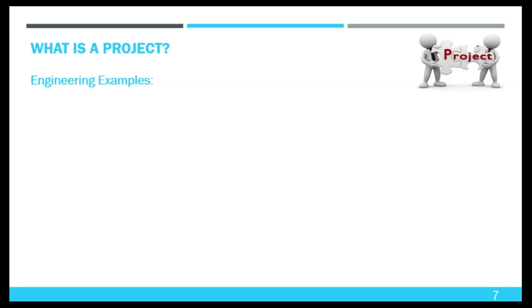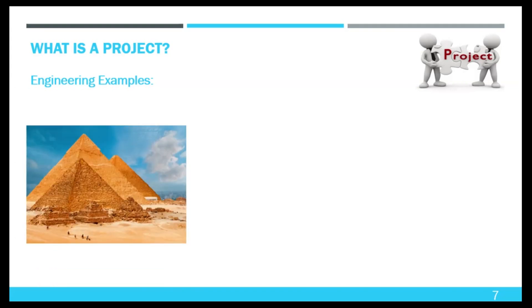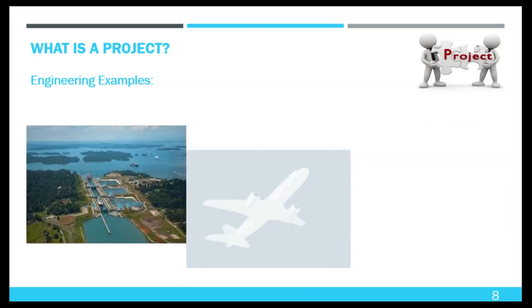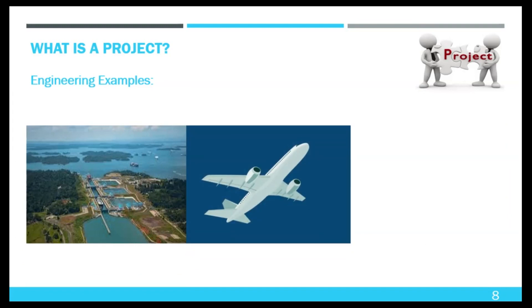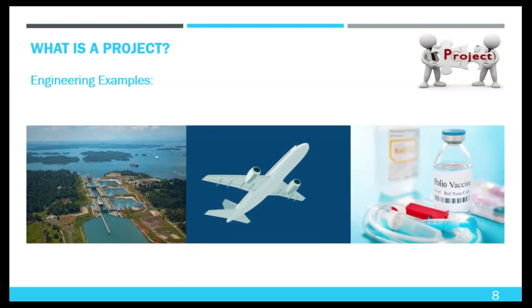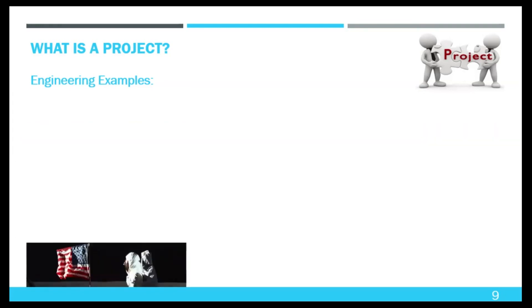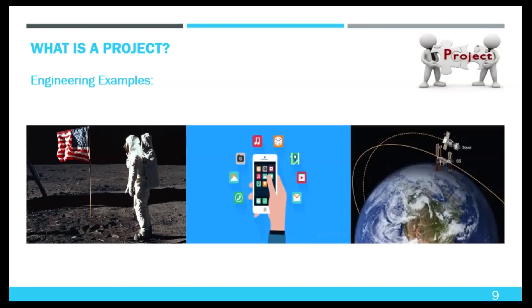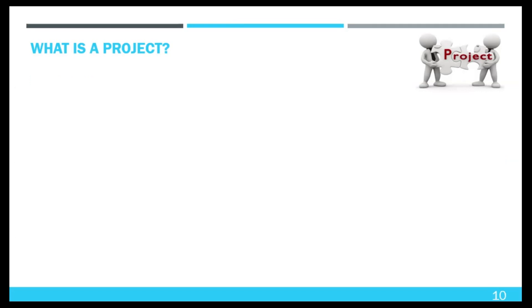Regarding engineering examples: a project to build a national monument will create a result expected to last for centuries. Examples include the Pyramids of Giza, the Olympic Games, the Great Wall of China, the Panama Canal, development of commercial jet airplanes, the polio vaccine, human landing on the moon, commercial software applications, and placement of the International Space Station into Earth's orbit. These are a few examples related to the engineering perspective.